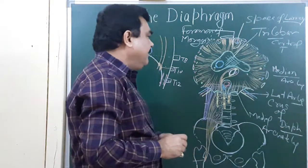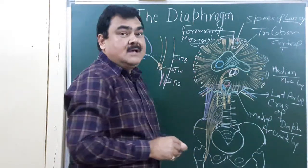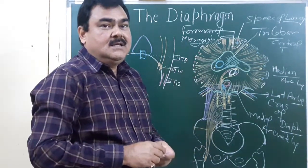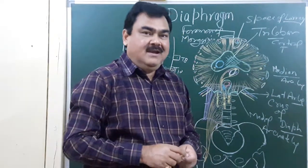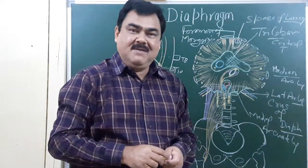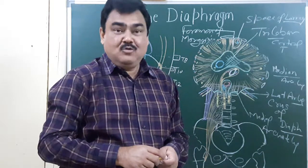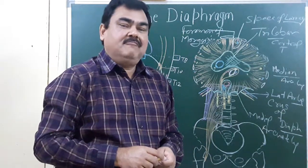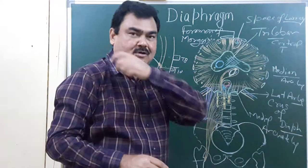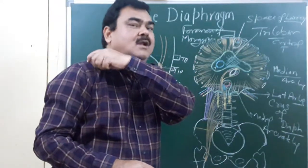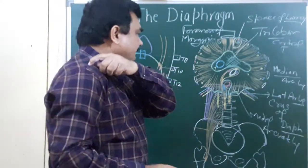And irritation of the diaphragm causes shoulder tip pain due to same nerve supply, same root value of the frenic nerve and supraclavicular nerve. So the right tip of the shoulder becomes painful.